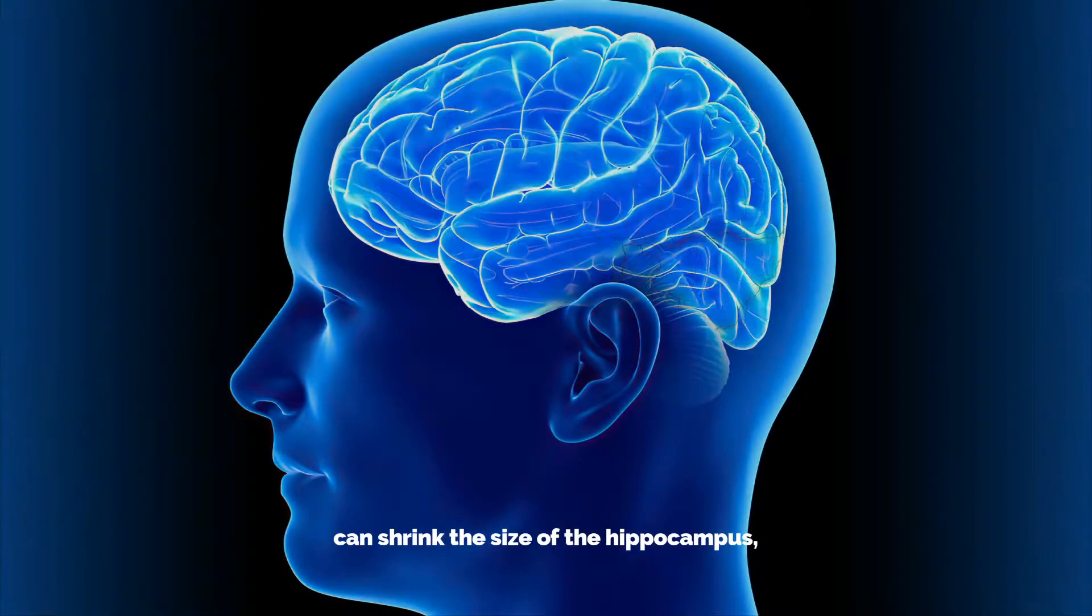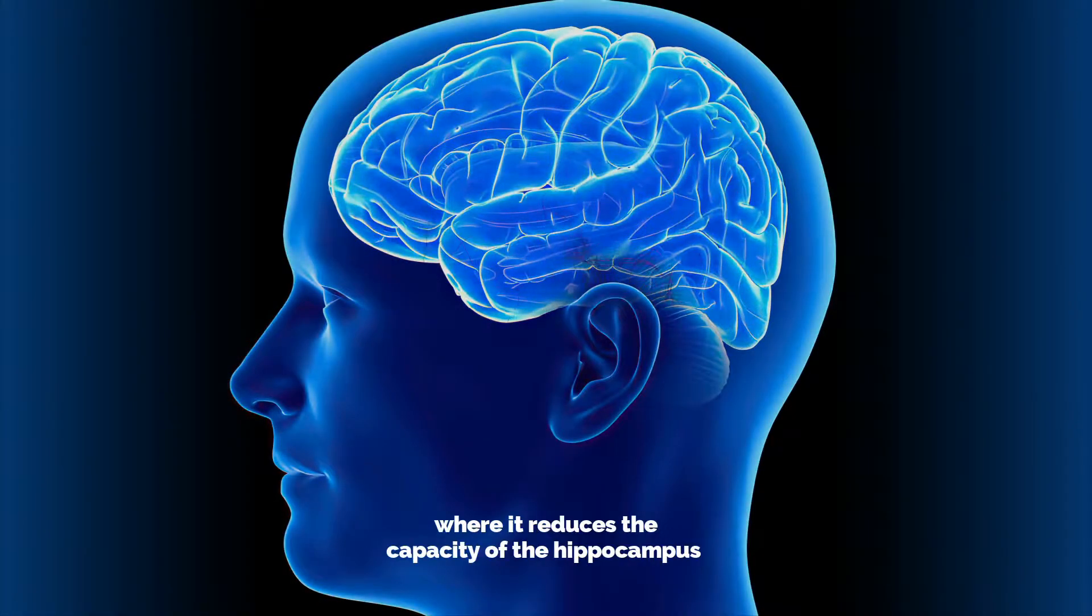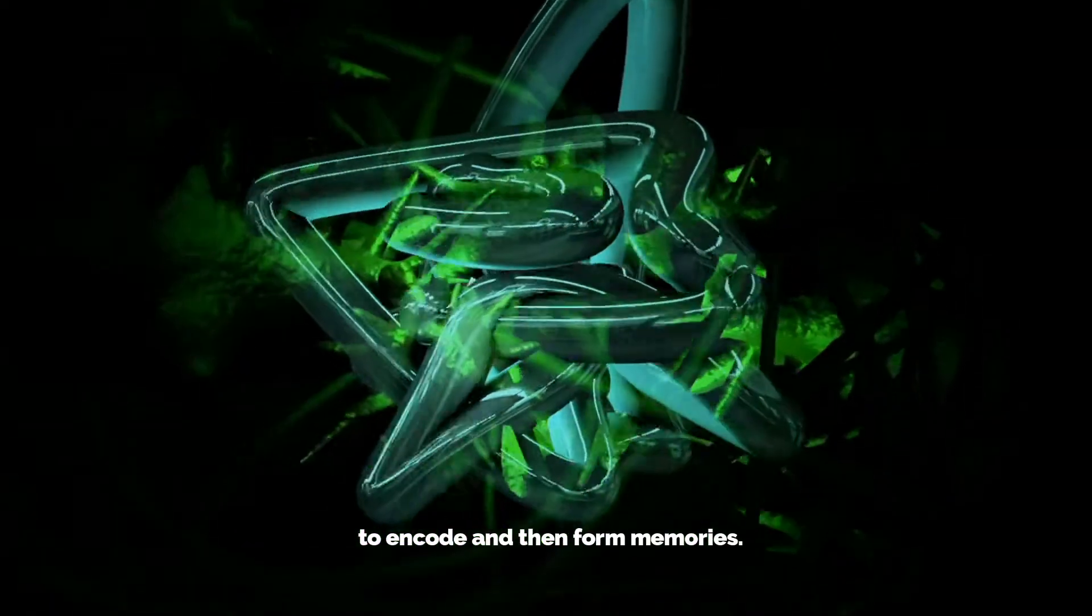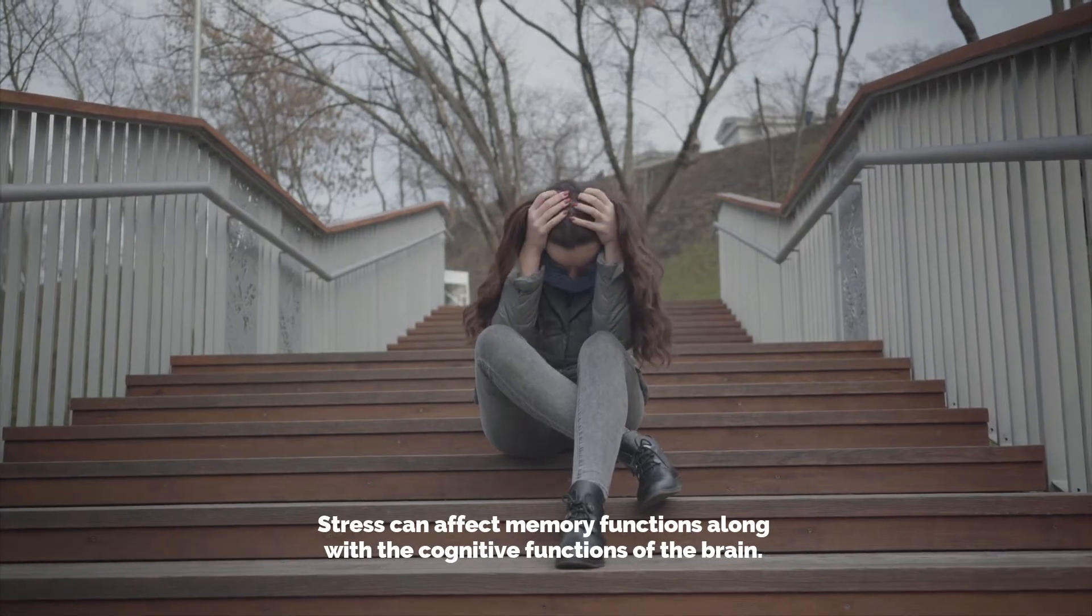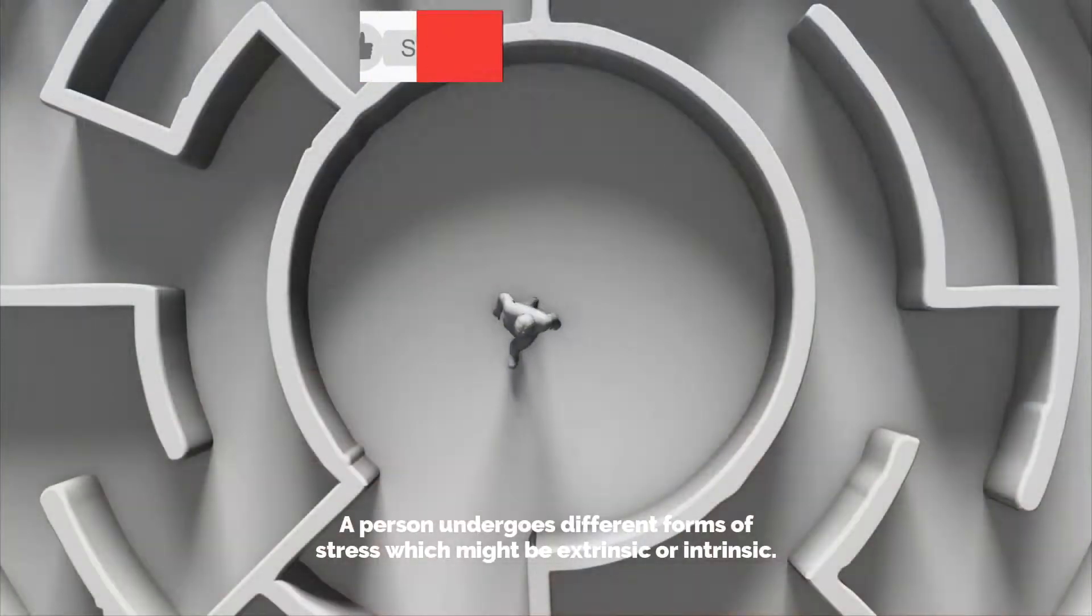Studies show that increased levels of stress hormones can shrink the size of the hippocampus, where it reduces the capacity to encode and form memories. Stress can affect memory functions along with the cognitive functions of the brain.